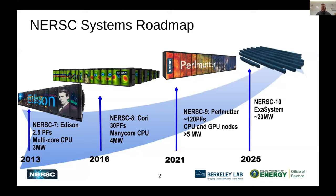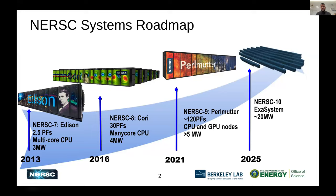Let me put Perlmutter in perspective. This is the NERSC system roadmap. We're in a transition from what were typical HPC systems a decade ago — with Edison being a multi-core CPU-based system replicated across thousands of nodes — toward energy-efficient exascale-like architectures. We started that transition with Cori, powered by Intel Xeon Phi processors, and with Perlmutter we have our first ever GPU-accelerated system.